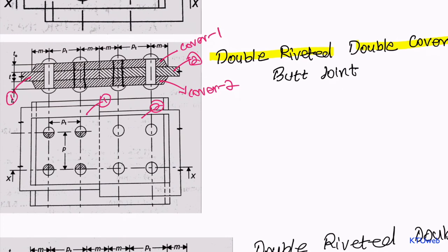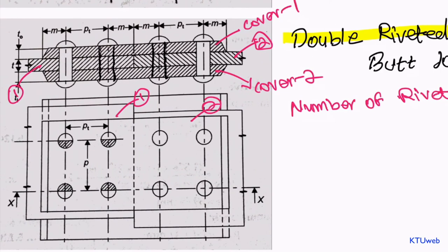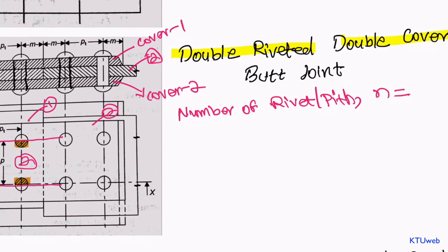Let us find the total number of rivets per pitch by plotting pitch lines. We have pitch lines here, here, and here. Within the pitch, we have half plus half giving one rivet, and another half plus half giving rivet number two. So the total number of rivets per pitch is equal to 2.